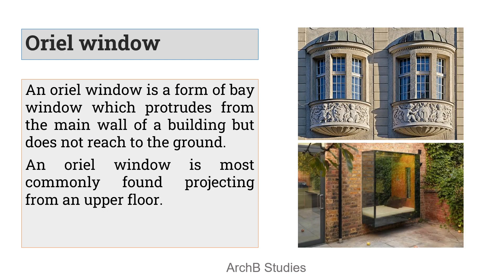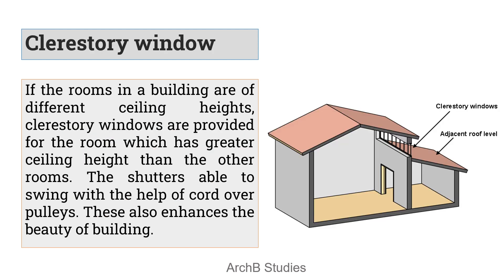Similar to this, we also have the oriel window. An oriel window is a form of bay window which protrudes from the main wall of the building, but it does not reach the ground. Mostly we see these projecting from the upper floors.